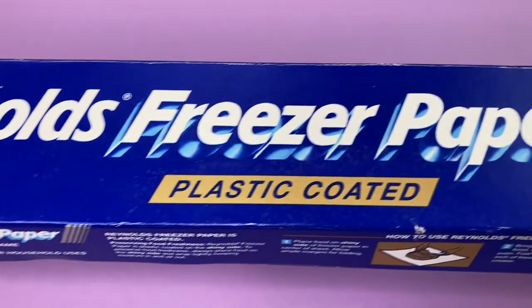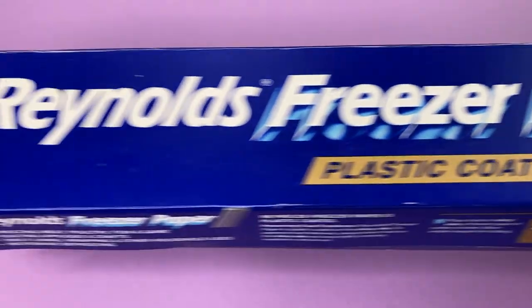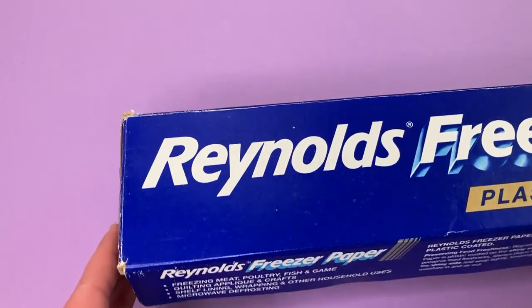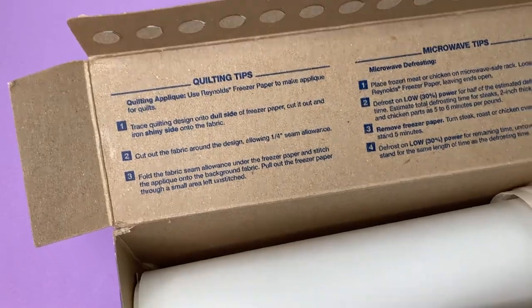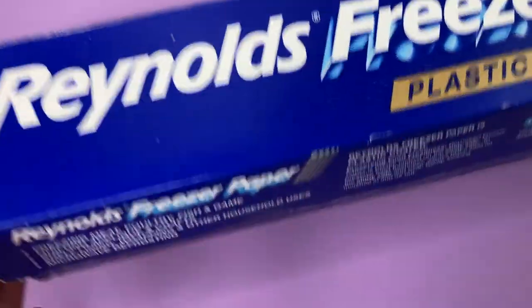And the secret supply is freezer paper. It's usually used for wrapping meat, but actually if you look inside the box, a lot of times you'll see quilting tips. So we're going to use a method similar to that, but for cutting out felt pieces.